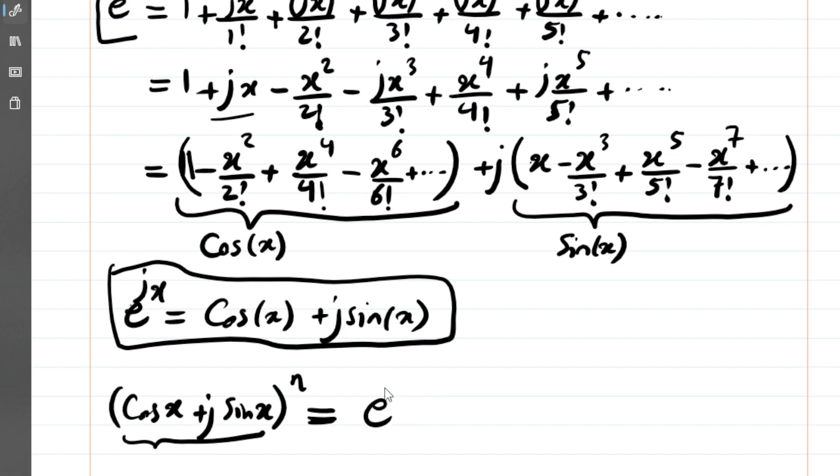Substituting, we get (e^(jx))^n. But (e^(jx))^n is naturally e^(jnx), which, using Euler's formula again, is cos(nx) + j*sin(nx).